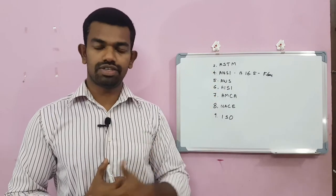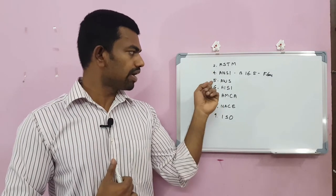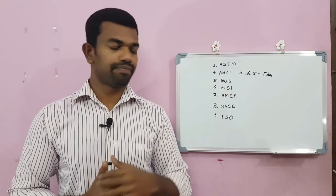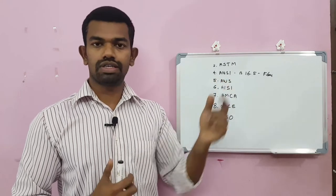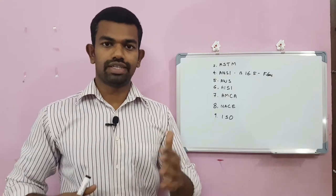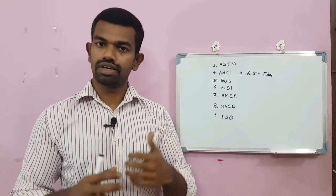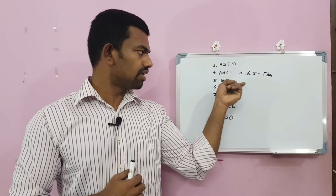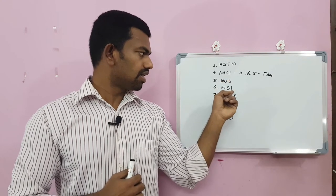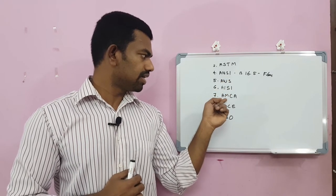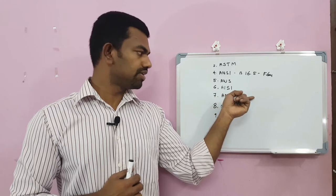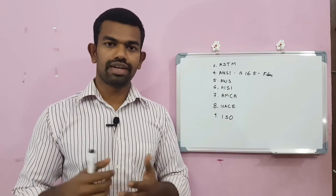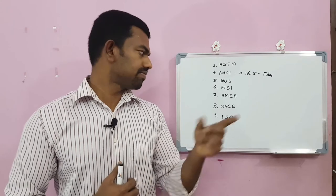AWS — American Welding Society — covers all welding-related topics, including both arc welding and gas welding. AISI is the American Iron and Steel Institute. AMCA — Air Movement Control Association — is used for centrifugal fans and heavy industrial fans.